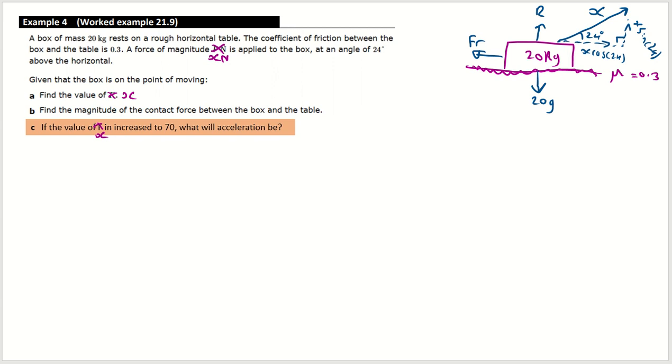The box is on the point of moving. So we can look at first of all the vertical forces. I'm going to do this in F equals MA. Because the object's not going to be accelerating this direction, you could do forces up equal forces down. So I've got R plus the X sin 24, which is pulling up, reducing the contact force, take away 20G. Because it's in equilibrium, that's equal to 20 times 0, or just 0. So you could go straight to forces up equal forces down, like this.